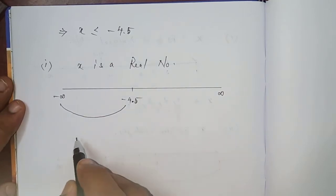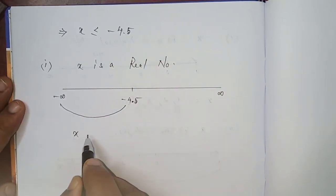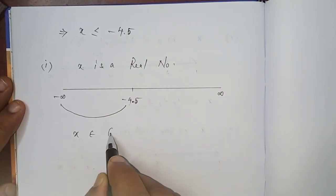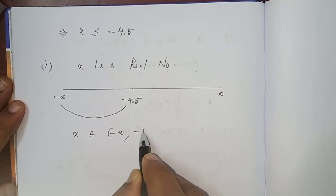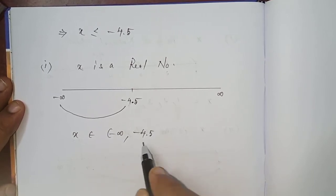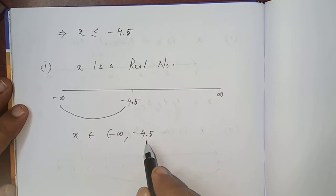Since it is a real number, you can represent the solution like this: x belongs to (-∞, -4.5]. This representation only for the set of real numbers.